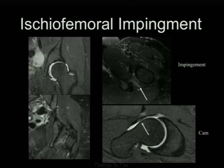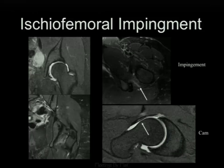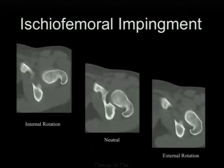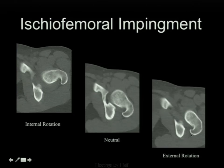A related mimic occasionally seen in young women is ischiofemoral impingement. A Stanford field hockey player was completely debilitated by hip pain; her arthrogram showed a normal labrum despite a CAM-type deformity. On axial images, there was edema in the quadratus muscle between the lesser trochanter and the ischium—a variant called ischiofemoral impingement. CT with internal and external rotation demonstrated that the lesser trochanter gets very close anatomically and essentially impinges on this muscle.